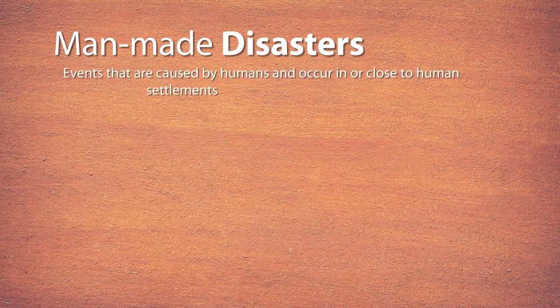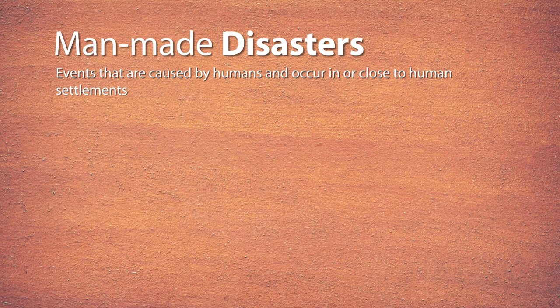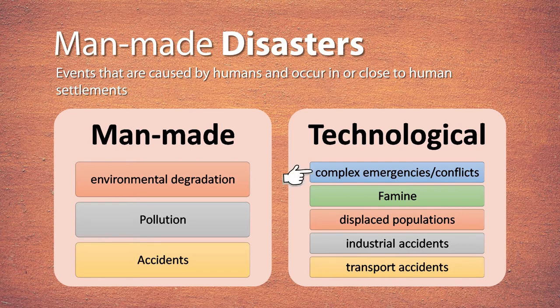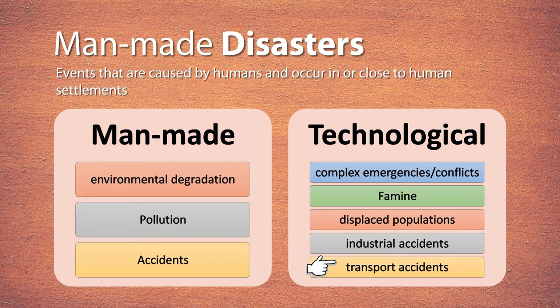A similar activity can be done for man-made disasters — events that are caused by humans and occur in or close to human settlements. These can be categorized into two categories: man-made includes environmental degradation, pollution, and accidents. When we add the technological dimension, it becomes complex emergencies or conflicts, such as forced displacement of populations, industrial accidents, and transport accidents. There are many types of man-made disasters.